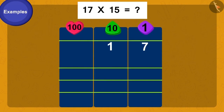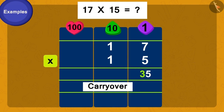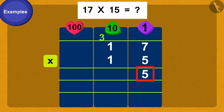First, we will write the multiplication this way. Now we will multiply 5 of 15 by 7 of 17. Did you get it? 35. Can we write both the digits of 35 as a single digit number? No. So what shall we do now? We will use carry-over: write 3 of 35 as a carry-over and write the 5 in the units place like this. Now we multiply 1 of 17 by 5 of 15. Got it? 5. But we also have 3 from the previous carry-over, so what shall we do? We will add 3 and 5 to find the answer.